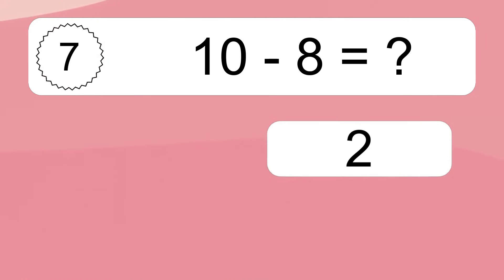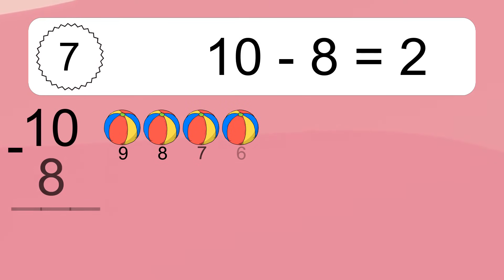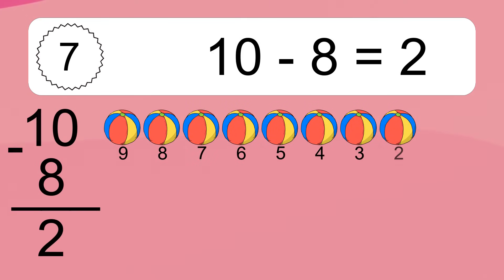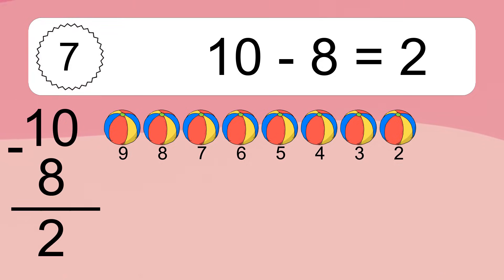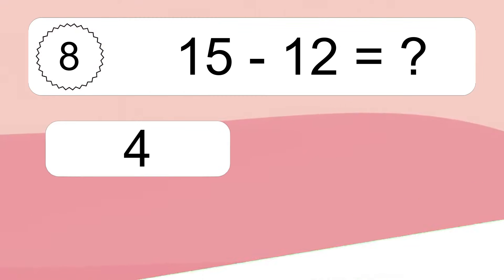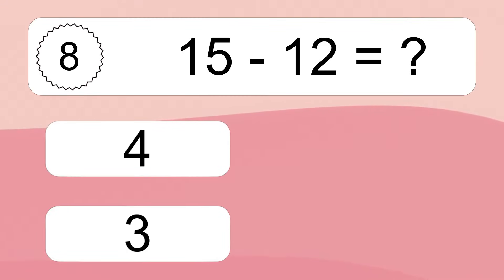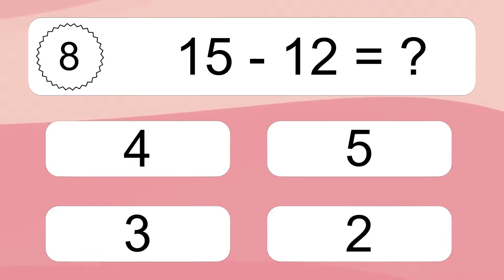10 minus 8 equals what? 10 minus 8 equals 2. Let's count it: 9, 8, 7, 6, 5, 4, 3, 2.